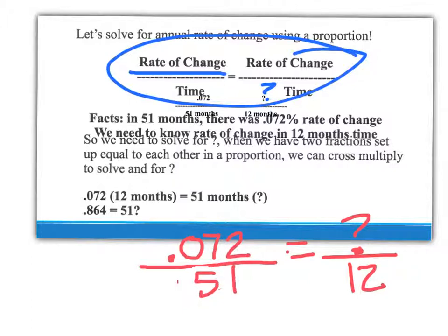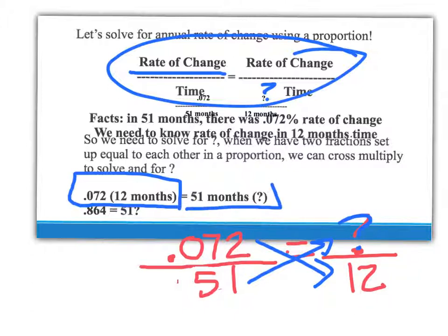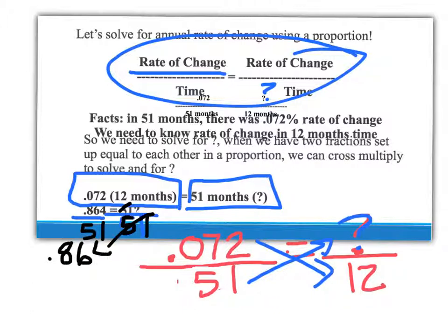To solve this problem, we're going to criss-cross and solve for the question mark. We take 0.072 and multiply it times 12, and then take 51 and multiply it by the question mark. That gives us 864 over 51. We divide both sides by 51 — the 51 cancels out — leaving us with 0.864 divided by 51.